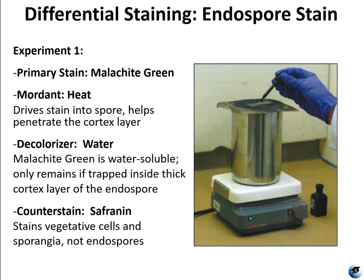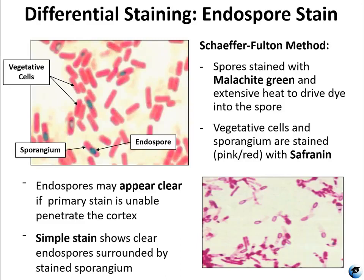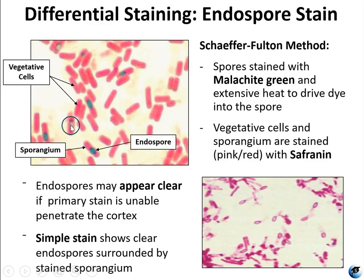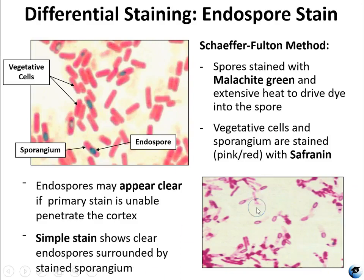Safranin will stain the vegetative cells and the sporangia, but it won't be able to penetrate the endospore. The green endospores appear either within the vegetative cells or separate from the cells altogether. Notice that some endospores appear clear — that just means the malachite green was not able to fully penetrate the cortex layer. Sometimes you can also find endospores with just a simple stain using crystal violet, and they would appear as clear.